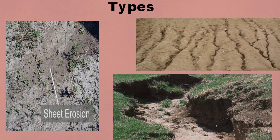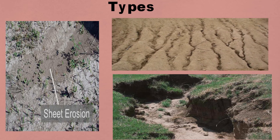Rill erosion: water moves rapidly over soil and appears in channels or streams. It forms a finger-like structure as shown.